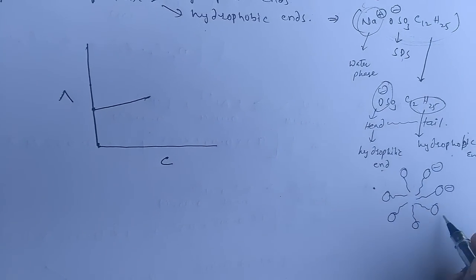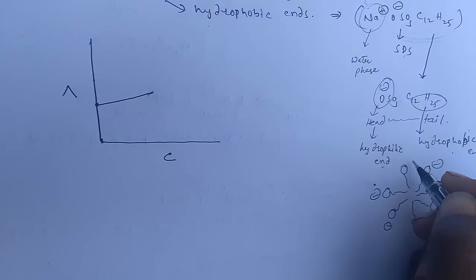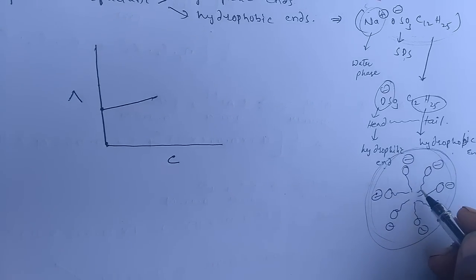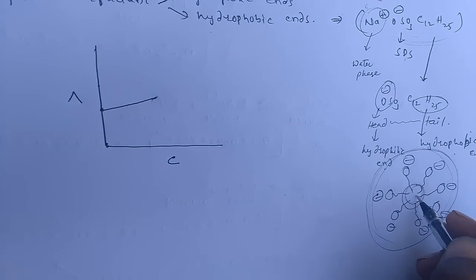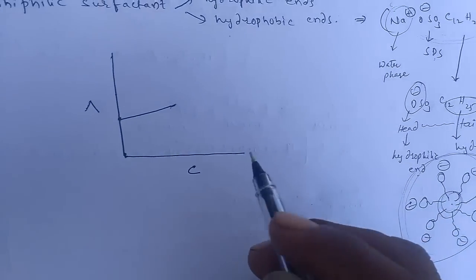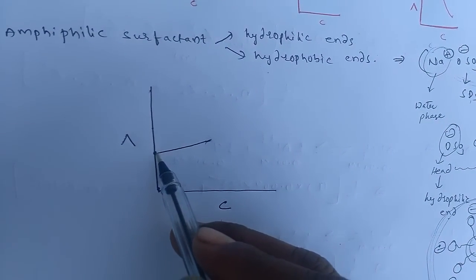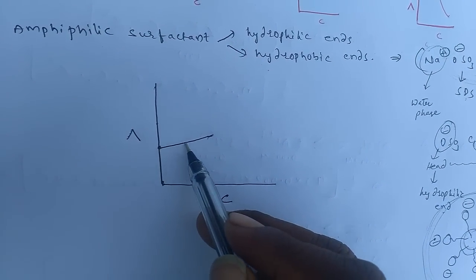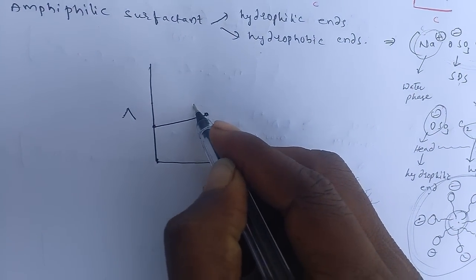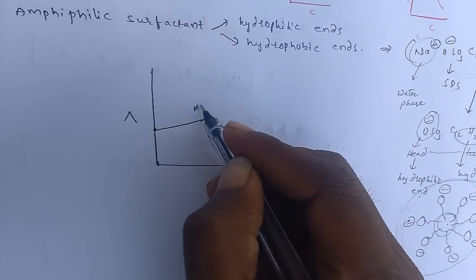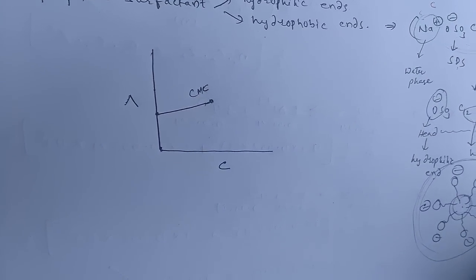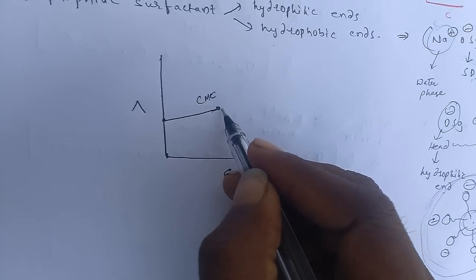The negative ions are exposed to the water phase, and the hydrophobic tails are placed in the interior of the micelle. As more SDS is added, the molar conductivity increases slowly, until we reach the critical micelle concentration (CMC).